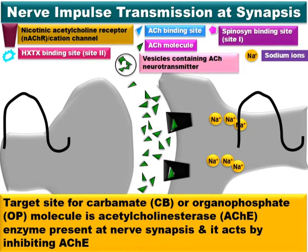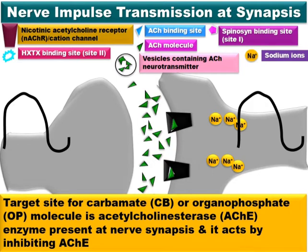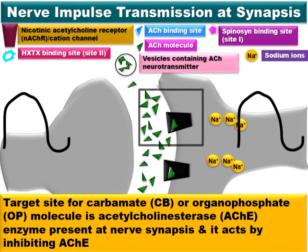The target site for carbamate and organophosphate insecticide molecules is the acetylcholinesterase enzyme present in the insect nervous synapse, and these insecticides act by inhibiting this acetylcholinesterase enzyme. I will now explain this in detail, taking a small portion of the post-synaptic membrane containing the nicotinic acetylcholine receptor and cation channel.